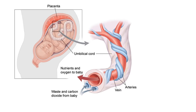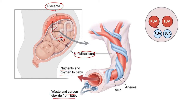Now let's understand fetal circulation. The placenta works as a lifeline for the fetus, because it provides oxygen and nutrients to the growing fetus. At the same time, it removes waste products from the fetus. In the center, there is a cord connected to the fetus, which we call the umbilical cord. In the umbilical cord, there are two umbilical arteries and two umbilical veins.